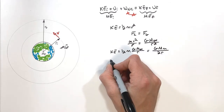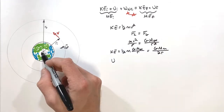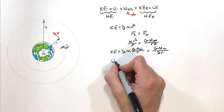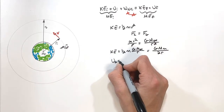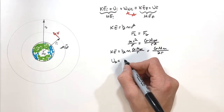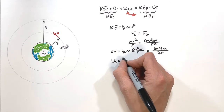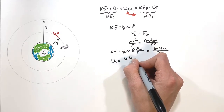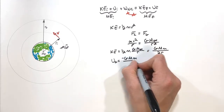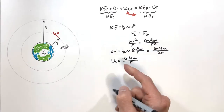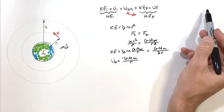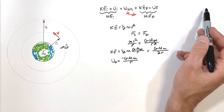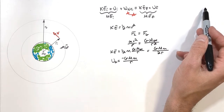Next, let's look at potential energy. We're dealing with gravitational potential energy over a great distance, so we can't use mgh. We must use the more refined version: gravitational potential energy equals negative GMm over r.